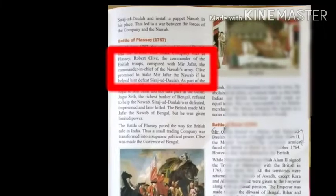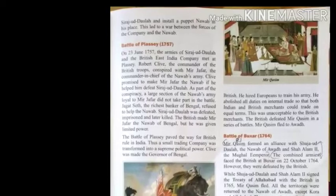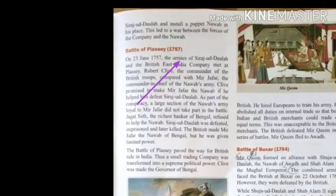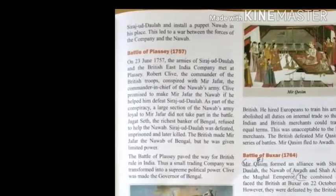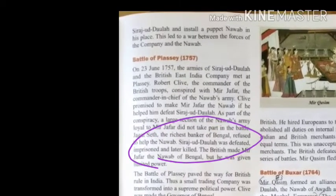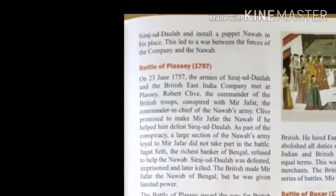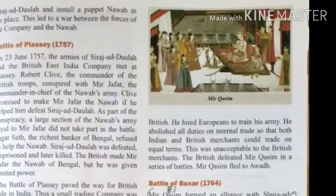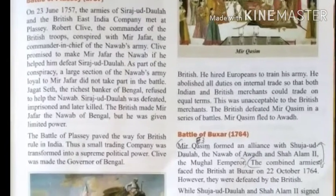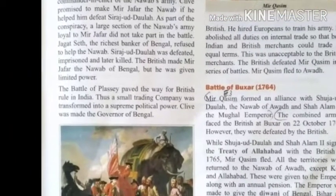And that is exactly what happened. Mir Jafar did not take part in the battle. Jagat Seth, the richest banker of Bengal, also refused to help the Nawab. Sirajud Daula was defeated, imprisoned, and later killed. The British made Mir Jafar the Nawab of Bengal, but he was given limited power. The Battle of Plassey paved the way for British rule in India. Thus, a small trading company was transformed into a supreme political power.